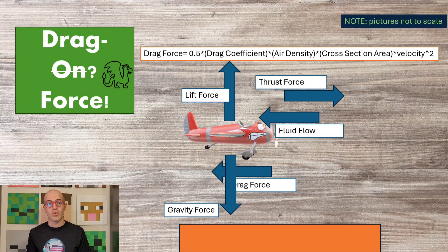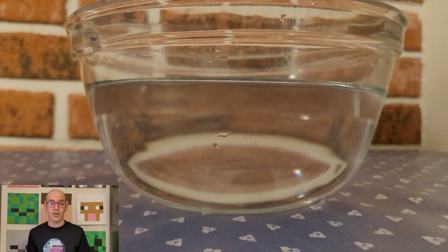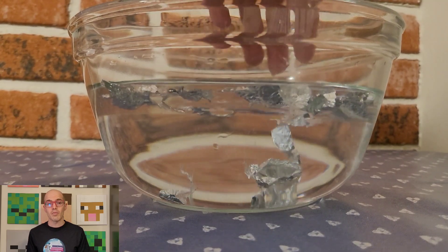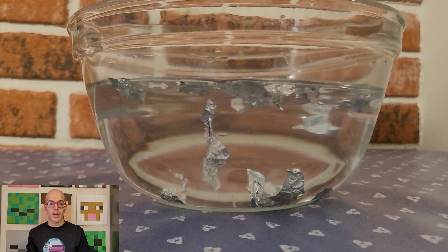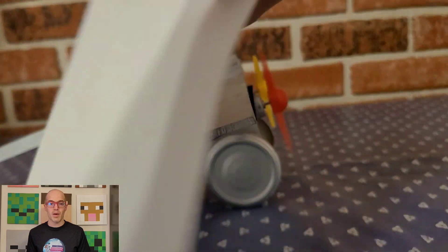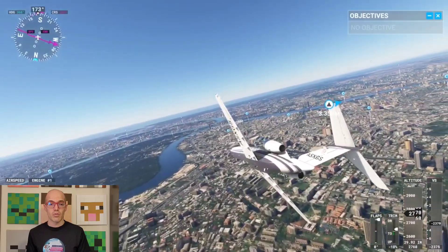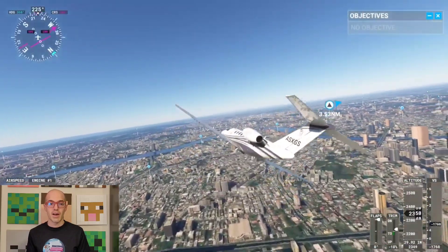Drag force is the resistance force experienced by objects moving through a fluid media such as air or water. It is responsible for slowing down the motion of objects by exerting an opposite force to their direction of motion. The strength of drag force depends on factors such as the shape and speed of the object, as well as the density and viscosity of the fluid. In the real world, drag force is evident in phenomena such as the slowing down of parachutes during descent or the resistance faced by vehicles moving through the air. In video games, drag force is simulated to create realistic physics, affecting the movement of objects through fluid environments such as in Microsoft Flight Simulator.